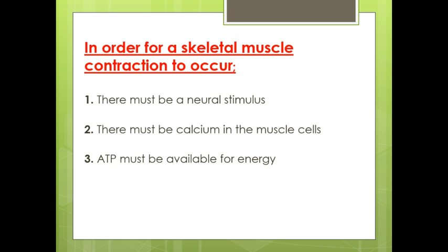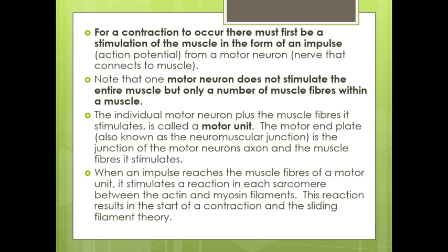There must be calcium in the muscle cells and ATP must be available for energy. There must first be stimulation of the muscle in the form of an impulse. The motor neuron stimulates only a number of muscle fibers within a muscle. The individual motor neuron plus the muscle fibers it stimulates is called a motor unit.